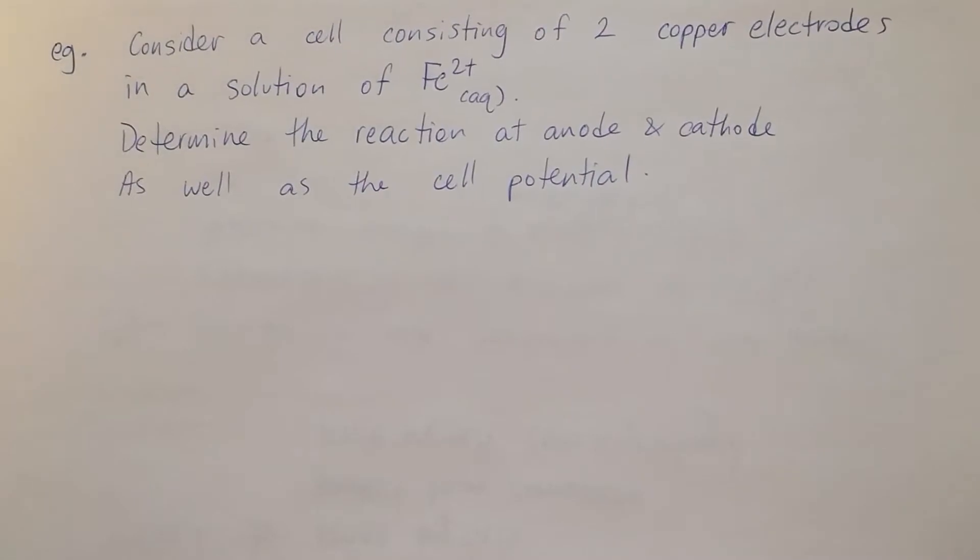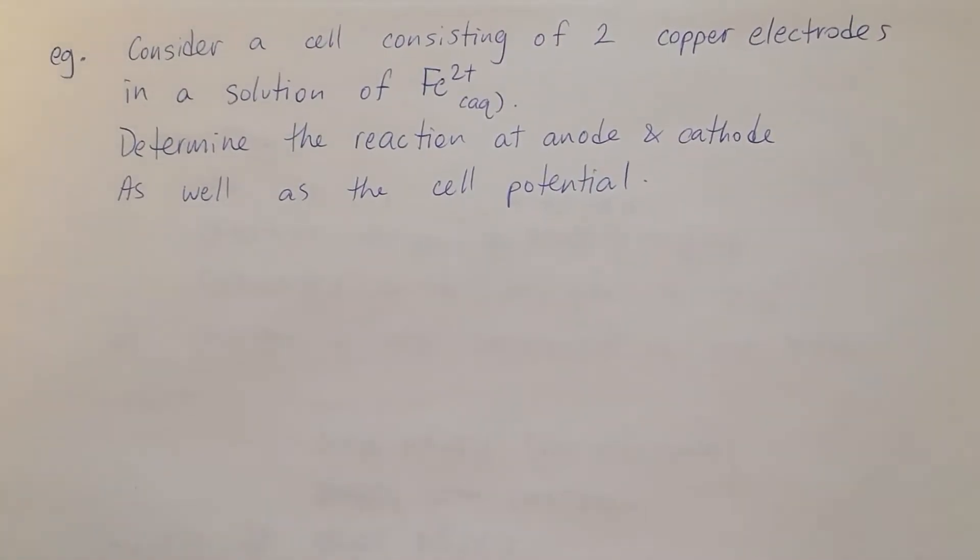I want to move into an example now. I want us to consider a cell that is two copper electrodes just sitting in a solution of Fe²⁺ ions. We're going to determine the reaction at the anode and the cathode and the overall cell potential.